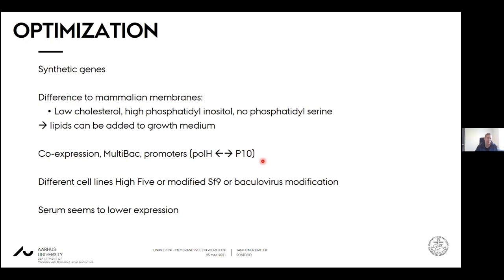You might want to consider coexpression, for instance with the MultiBac system — chaperones or binding partners. Also, the polyhedron promoter and the P10 promoter can differ in expressing your protein levels. If you have established expression, you can also try different cell lines, for instance High Five cells or SF9 cells, or use further Baculovirus modifications similar to introduction of glycosylases to achieve a more native mammalian-like glycosylation pattern. And something to avoid in expressions is serum, because it has been shown to lower your protein expression yields.